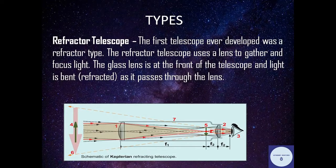Refractor telescopes were the first type ever developed. They use a lens to gather and focus light. The glass lens is at the front of the telescope, and light is bent or refracted as it passes through the lens.